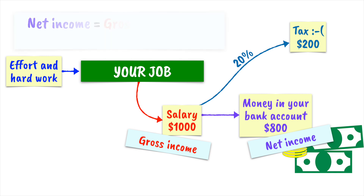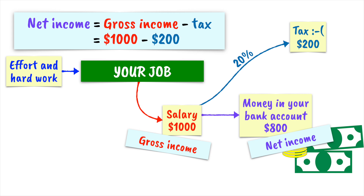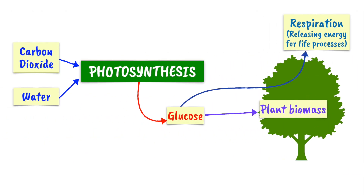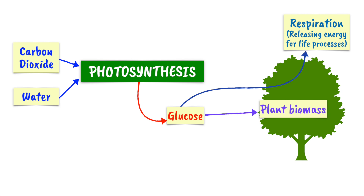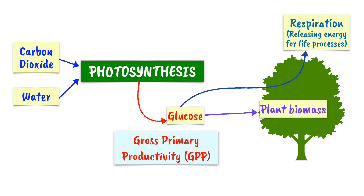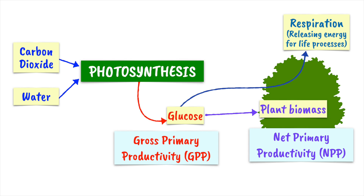The maths here is pretty simple. Your net income is equal to your gross income minus the tax — $1,000 minus the $200 tax. This way of thinking works for productivity, too. The rate at which solar energy is converted to chemical energy in the form of glucose by producers — all the glucose before any of it is used in respiration — is known as the gross primary productivity. The net gain in biomass of the plant, the net primary productivity, is all of that material produced minus what has been lost to respiration. So mathematically, net primary productivity equals gross primary productivity minus the respiratory losses.